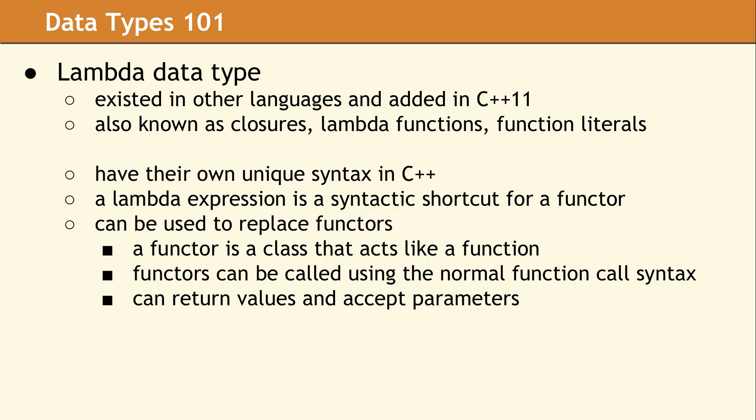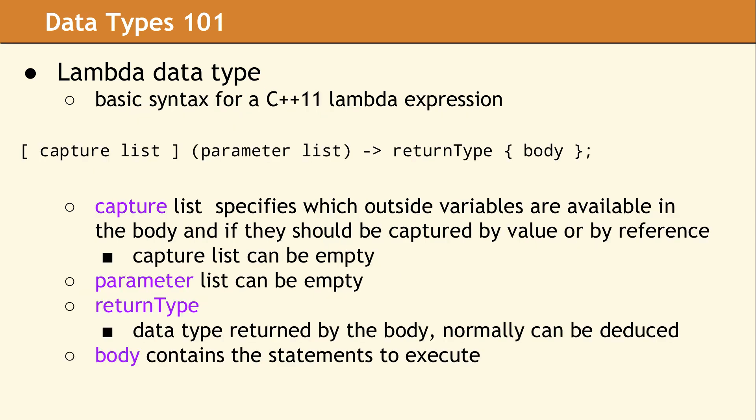The Lambda data type existed in other computer languages, like Smalltalk and Lisp, and was added to C++ in 11. The syntax in C++ is very unique. A Lambda expression can be thought of as a shortcut for a functor. A functor is a class that acts like a function, and it can return values and accept parameters. The basic syntax for a C++ 11 Lambda expression looks like this. We first have the capture list, denoted by square brackets, then the parameter list denoted in parentheses, an optional return type set off by an arrow, and then the body of the Lambda enclosed in curly braces.